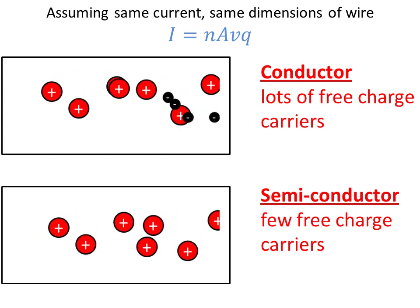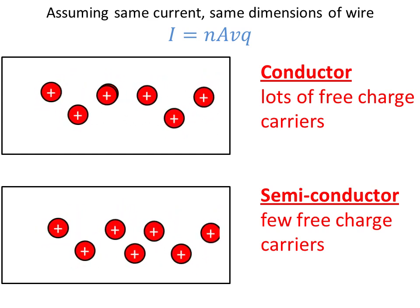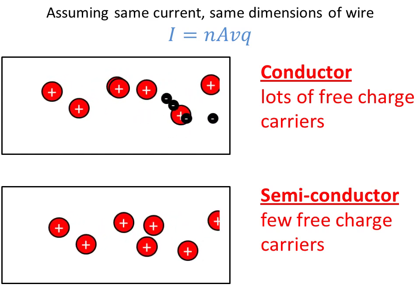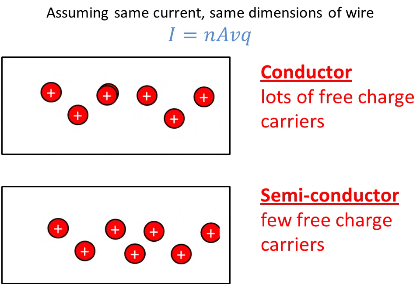Whereas in a semiconductor, when we heat them up, we actually liberate more free charge carriers, so we actually introduce more electrons that are able to move, so we actually reduce the resistance of a semiconductor.